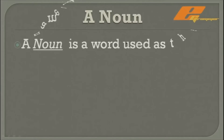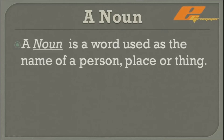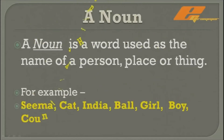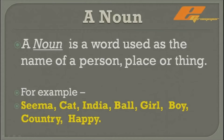A noun is a word used as the name of a person, place, or thing. Anything around us which has its particular proper name is known as a noun — including feelings and ideas. For example: Seema, cat, India, ball, girl, boy, country, happy — these are all names, places, things, and feelings generally expressed in the form of a noun.